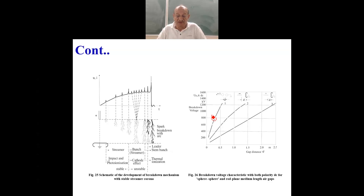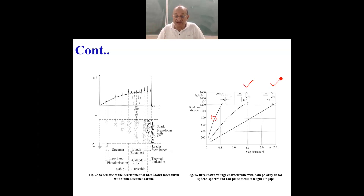Now we go to the other type of electrode, that is rod and plane. When we have a gap distance of even maybe 5-10 centimeters, it may be weakly non-uniform field. But when we increase the gap distance, the field becomes extremely non-uniform. Under both these conditions - small and large gap with rod and plane - the field is extremely non-uniform, and stable partial breakdown activity precedes the global breakdown.